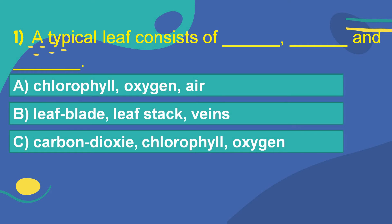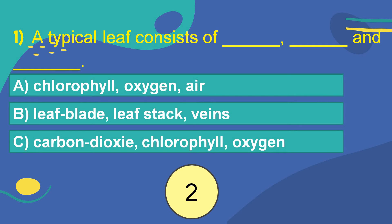Think of the answer. Your time starts now. 5, 4, 3, 2, 1, 0. OK. The correct answer is Option B: Leaf blade, leaf stalk, veins.